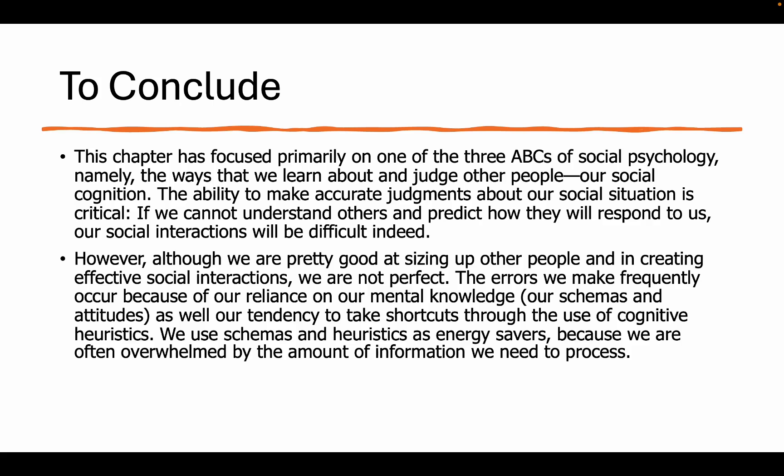To conclude, this chapter is focused primarily on one of the three ABCs of social psychology — namely, the ways that we learn about and judge other people: social cognition. The ability to make accurate judgments about our social situation is critical. Although we are pretty good at sizing up other people and creating effective social interactions, we are not perfect. Errors we make frequently occur because of our reliance on our mental knowledge — our schemas and attitudes — as well as our tendency to take shortcuts through the use of cognitive heuristics. We use schemas and heuristics as energy savers because we are often overwhelmed by the amount of information we need to process.